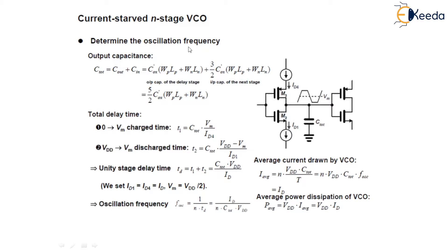First, let us determine the oscillation frequency. The output capacitance C_total will be C_out plus C_n. That can be given as C_ox(W_P L_P plus W_n L_n) plus 3/2 C_ox(W_P L_P plus W_n L_n). This is the output capacitance of the delay stage where this is the input capacitance of the next stage, and this total will give us 5/2 C_ox(W_P L_P plus W_n L_n).